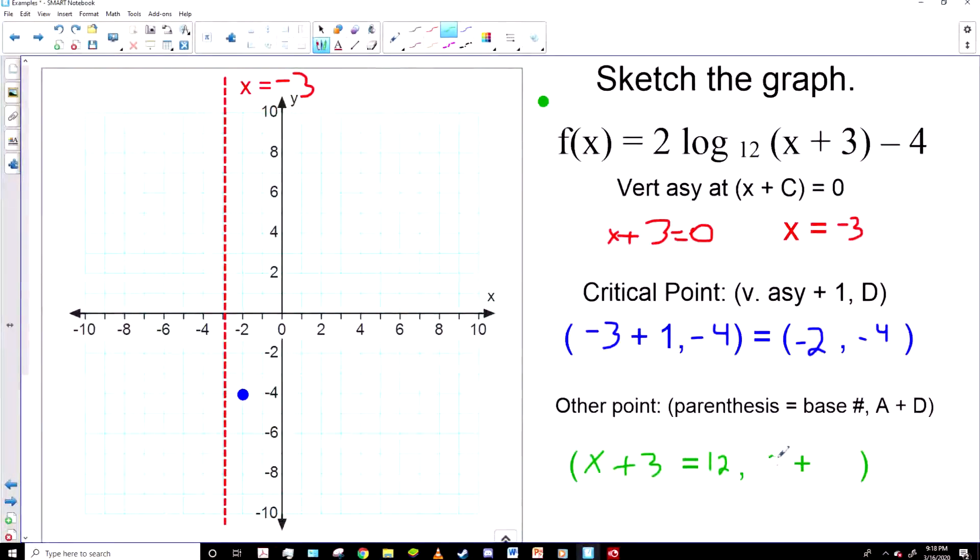So the X value is nine. And then the A plus D comes out to be two plus a negative four. So nine, comma, negative two. And that's our second dot.